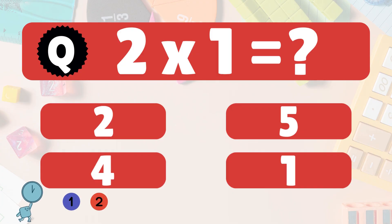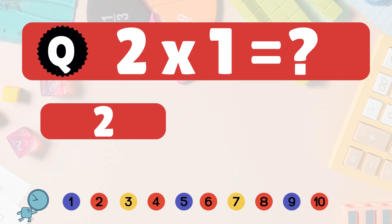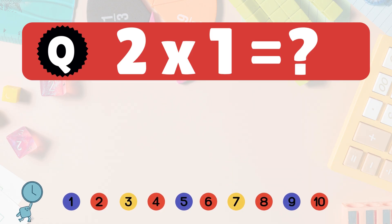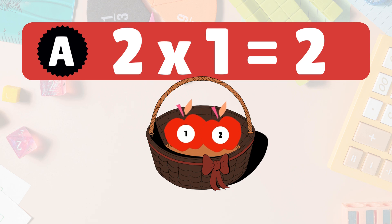2 times 1 is what? 2 times 1 is 2. Here we have 1 group of 2 apples. So 2 times 1 is 2 apples.